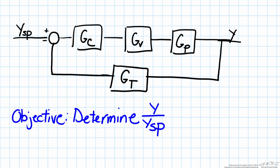The objective of this screencast is to show how to use block diagram algebra to find the transfer function that relates an input and an output variable.